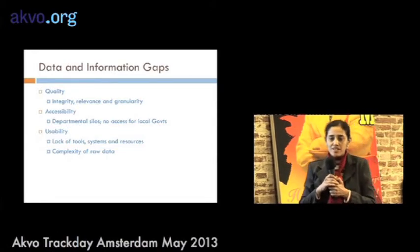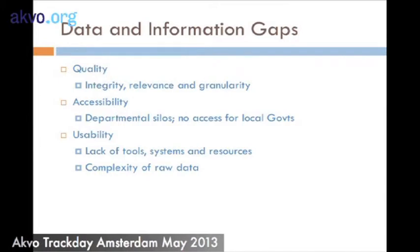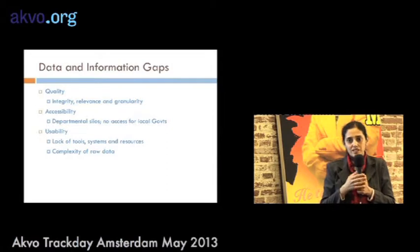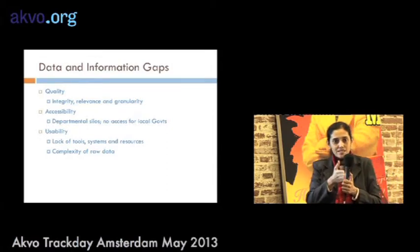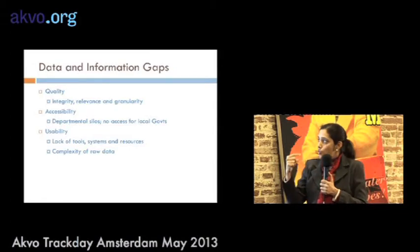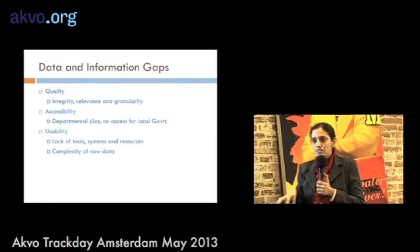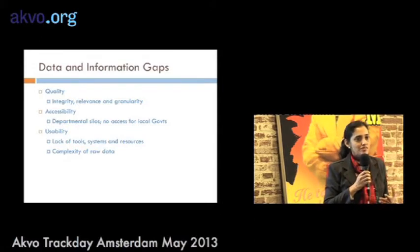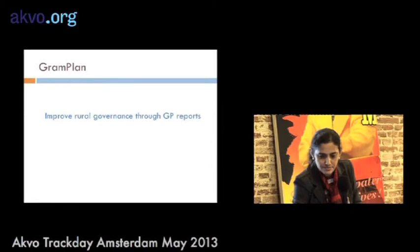Looking specifically at data and information gaps from the local government's point of view, there are three types of problems. First, the quality of data — the integrity is often very poor, it's not updated regularly, and it's not granular enough for local use. Second, accessibility — data sits in departmental silos; the education department has its data, health has its data, but the local government needs all of it for its local area. Third, usability — without sufficient tools, resources, and skills, the raw data is not very actionable.